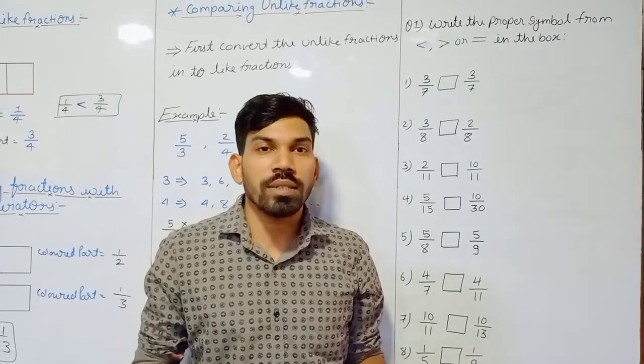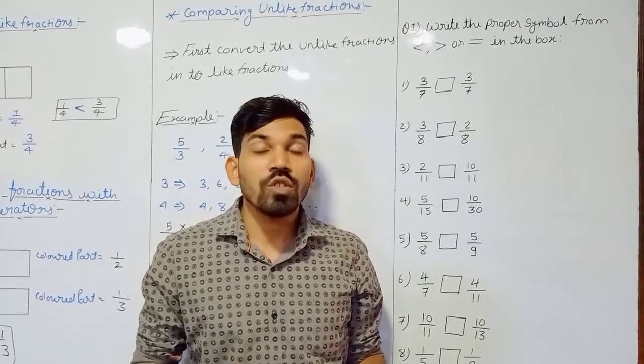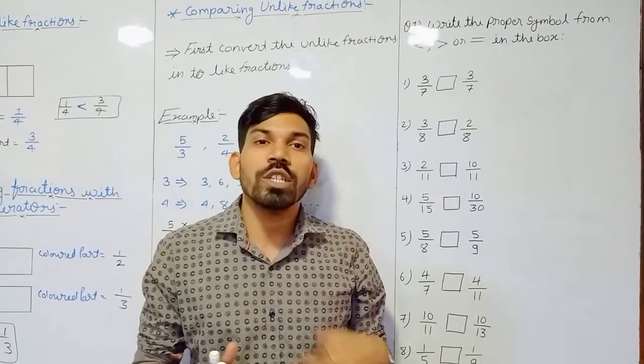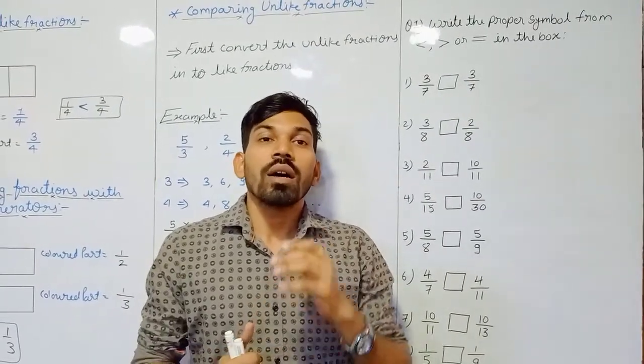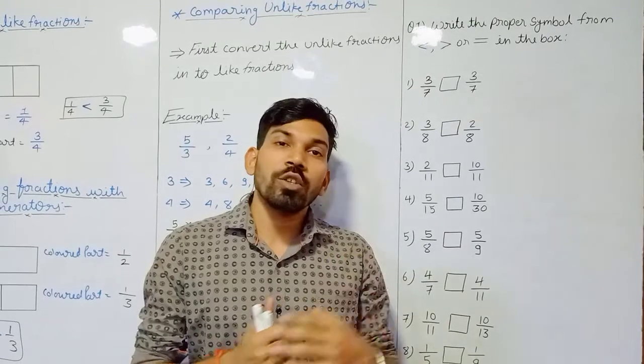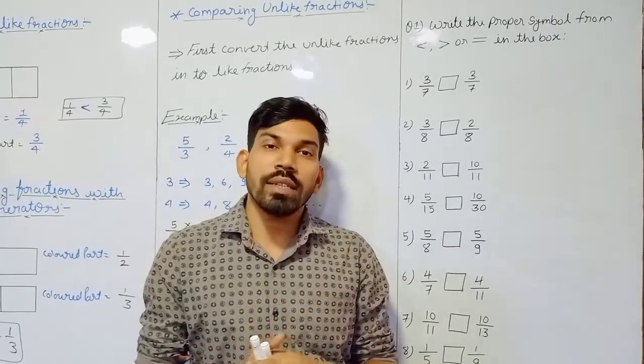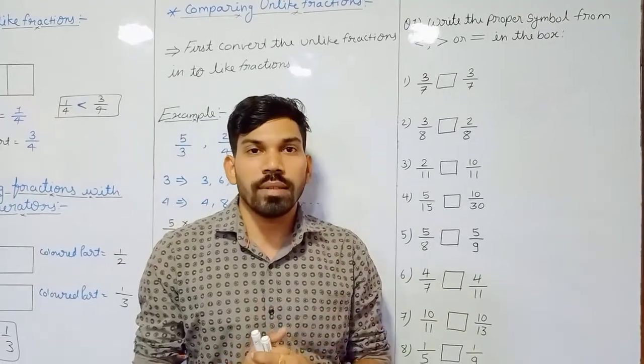And if we have unlike fractions — meaning neither the numerator nor the denominator are the same — then first convert them into like fractions, and then do the comparison.